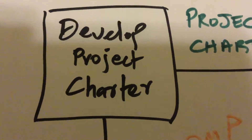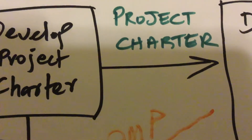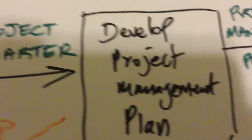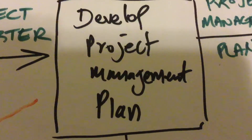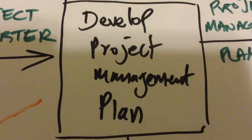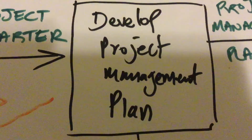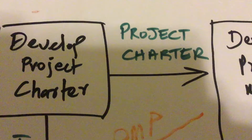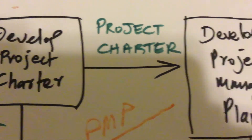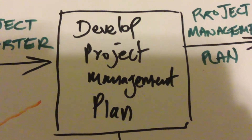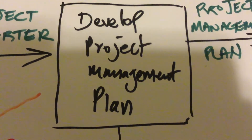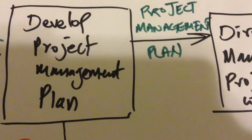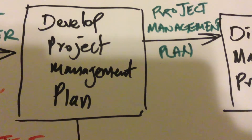The project charter comes from the developed project charter process. Once this is created, it goes into the developed project management plan process so that the project management plan can be created based on information available from the project charter and other existing information. The project management plan is worked, and the moment you get your project management plan, it goes to a number of places.